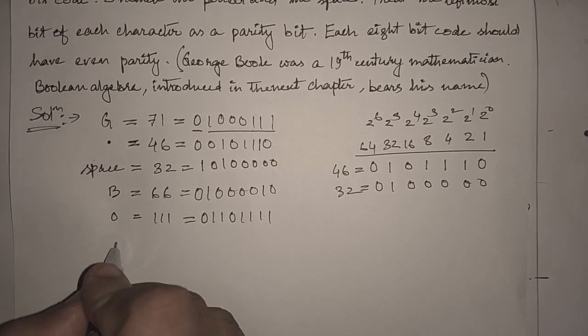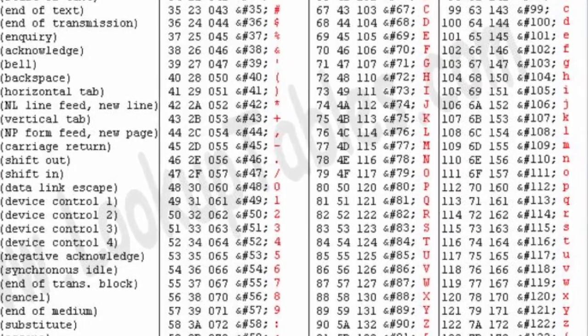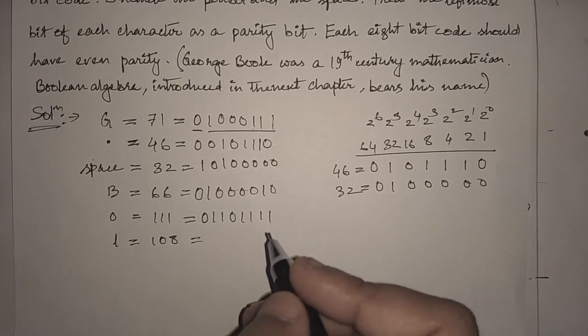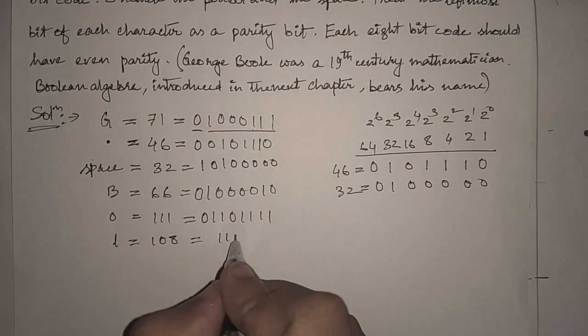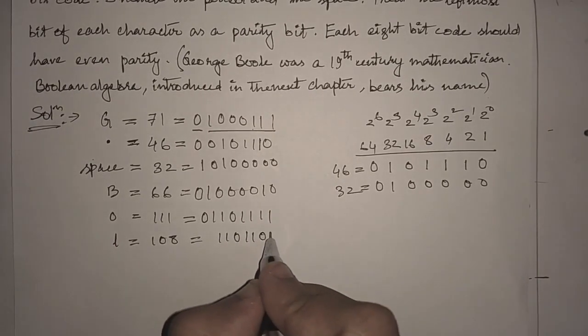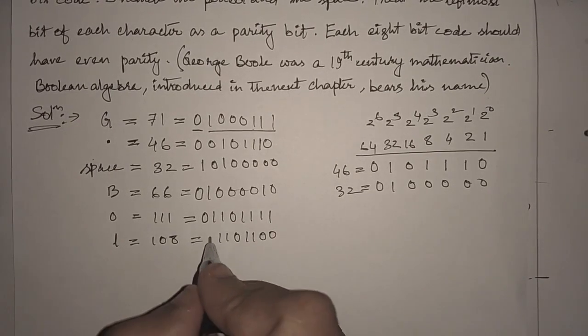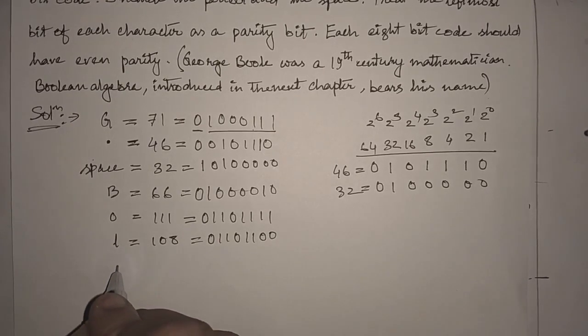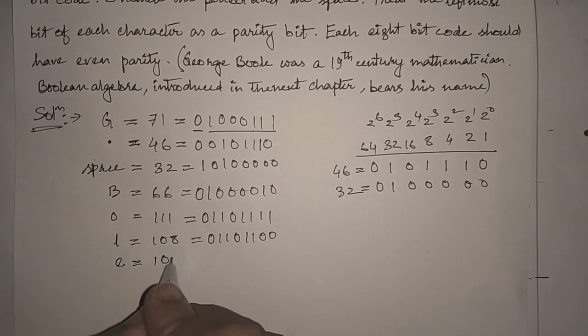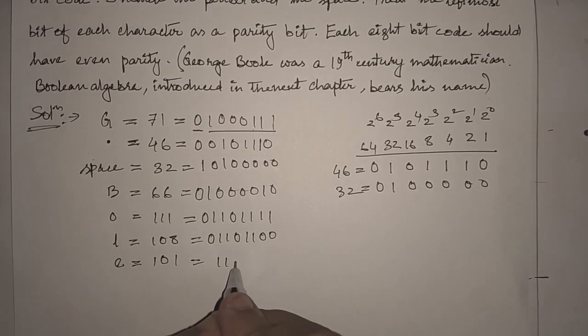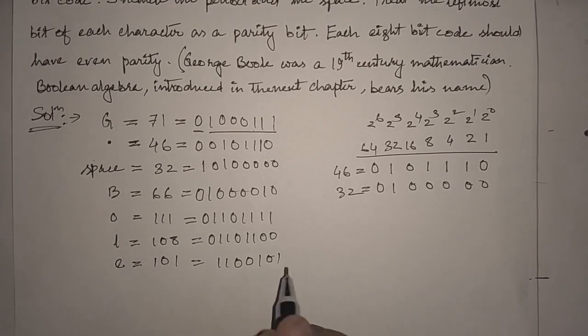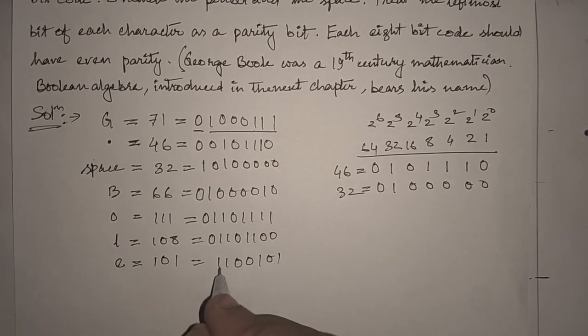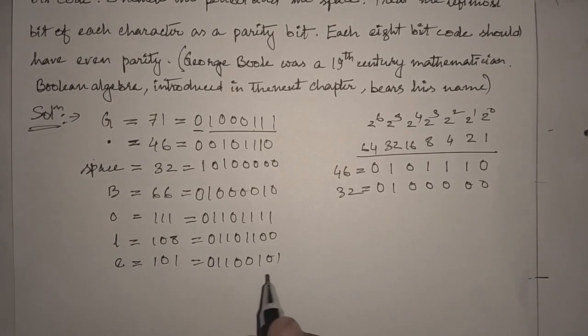Then we have l. Small l is represented as 108. 108 can be written in ASCII code as 1101100. Here we can see that we have four number of ones, so the even parity bit is 0. Then we have e, which is 1100101, that means 64 plus 32 plus 4 plus 1. Here also the even parity will be 0.